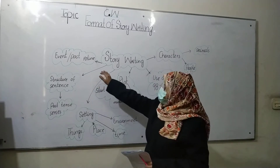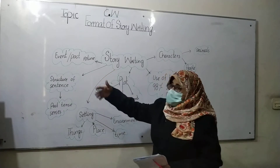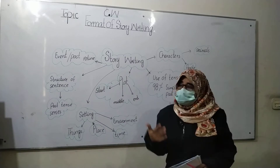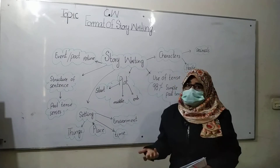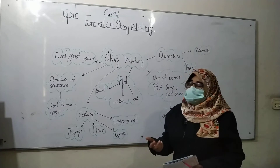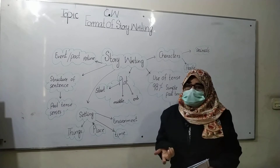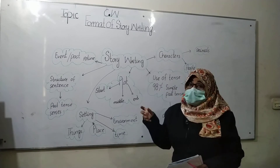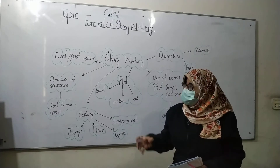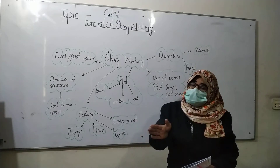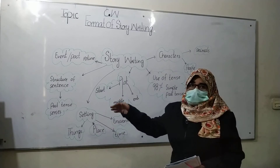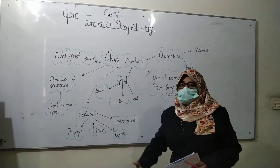Next is the event, or past routine. What you are going to tell the reader, what you are going to write for the examiner in the story — you are going to write an imaginary story or a real one, but it should be related to the past: past tense, or an event that has already passed.